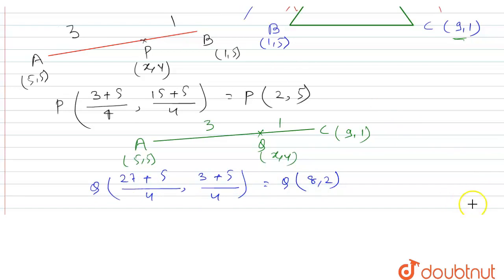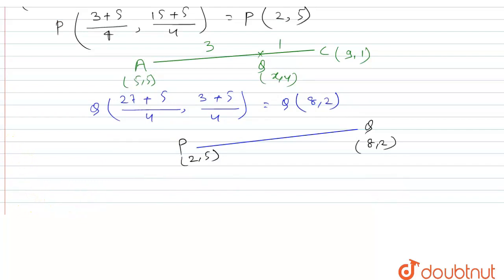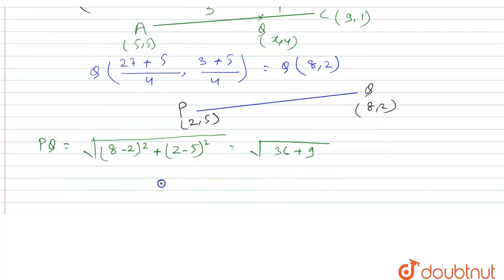Now we can find the length of PQ using the distance formula. P is (2,5) and Q is (8,2). PQ = √((8−2)² + (2−5)²) = √(36 + 9) = √45 = 3√5 units. This is the length of PQ.